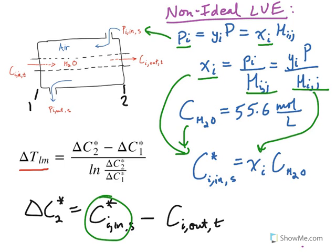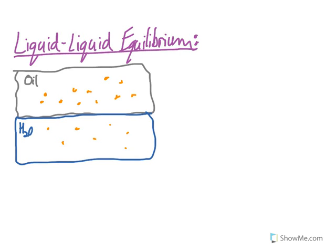You can also go in the reverse direction. If both phases are liquid instead of gas-liquid, you don't use a liquid-vapor equilibrium — you use a liquid-liquid equilibrium. For non-ideal liquid-liquid systems, we use the partition coefficient K. For example, K_ow (oil over water) equals the concentration of species I in the oil phase divided by the concentration of species I in the water phase.